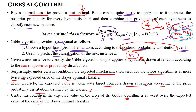The expected value of error of the Gibbs algorithm is at worst twice the expected value of error of the Bayes optimal classifier. This is because considering only a single hypothesis randomly leads to more error than the Bayes optimal classifier, which considers all hypotheses. Therefore, the error rate is higher in the Gibbs algorithm than in the Bayes optimal classifier.